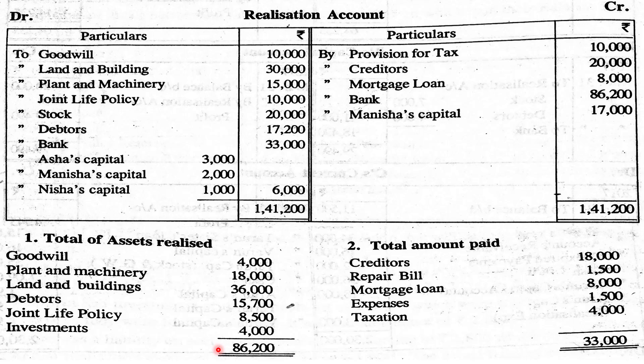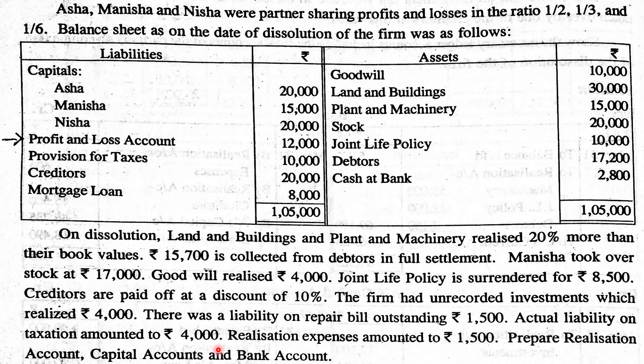Then the liability accounts are closed, followed by the asset accounts. Then the cash account is closed, then liabilities are paid off, then realization expenses are closed. That is the procedure — first the asset accounts are closed.